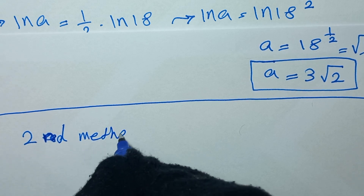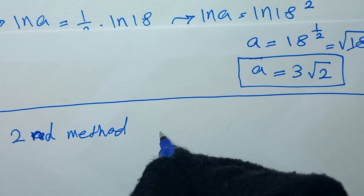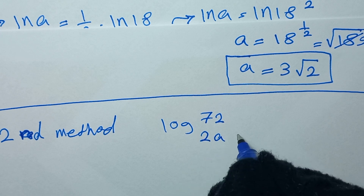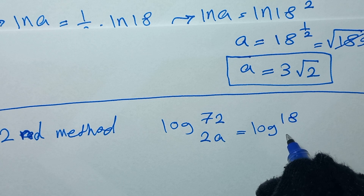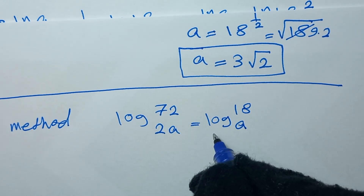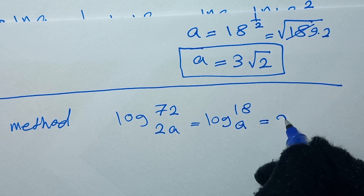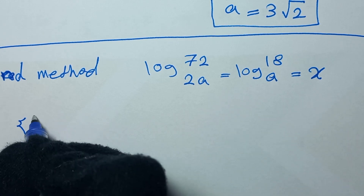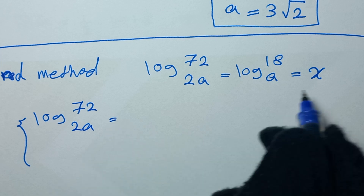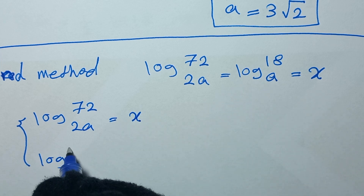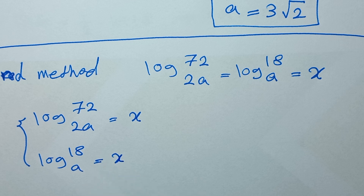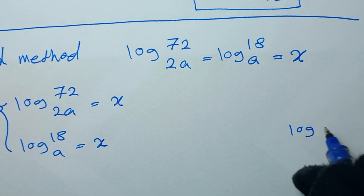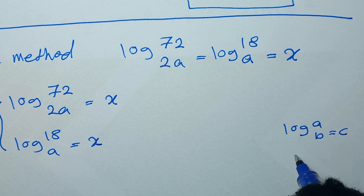Second method. Our problem is: log of 72 to base 2a equals log of 18 to base a. We let both sides equal x. So we have two equations: log of 72 to base 2a equals x, and log of 18 to base a equals x. From log rules, if log of a to base b equals c, then a equals b to the power of c.